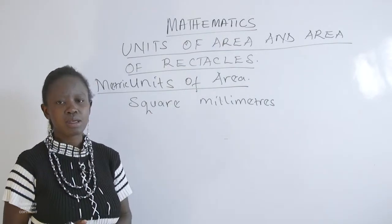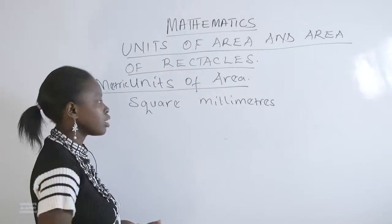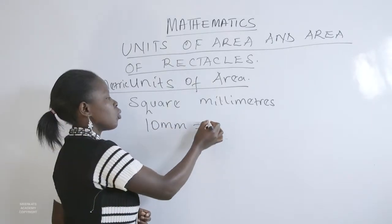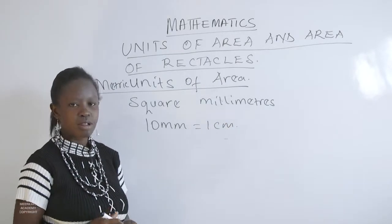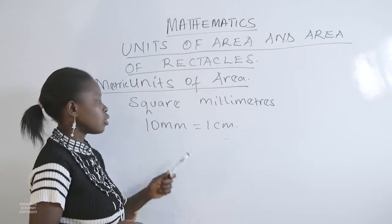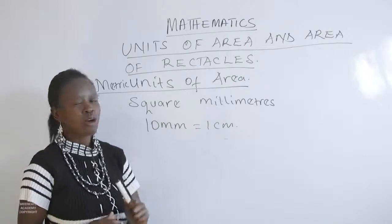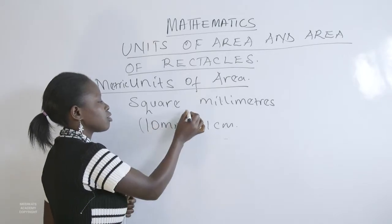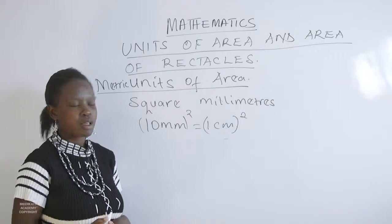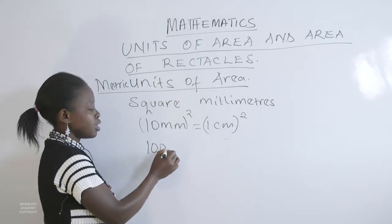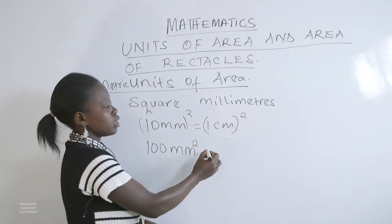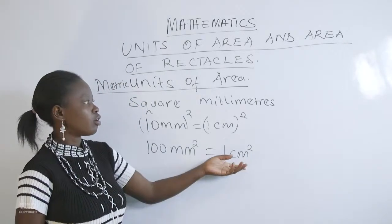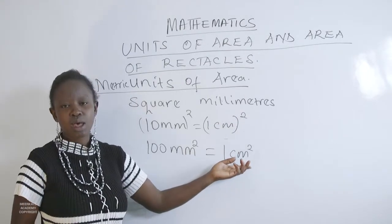When we look at the conversion of metric units, 10 millimeters is equal to 1 centimeter. If we are looking at area, we use square millimeters as a unit. That means we square both sides. If I square both the left-hand side and the right-hand side, then 100 square millimeters is equal to 1 square centimeter. So another unit of area we have is square centimeters.